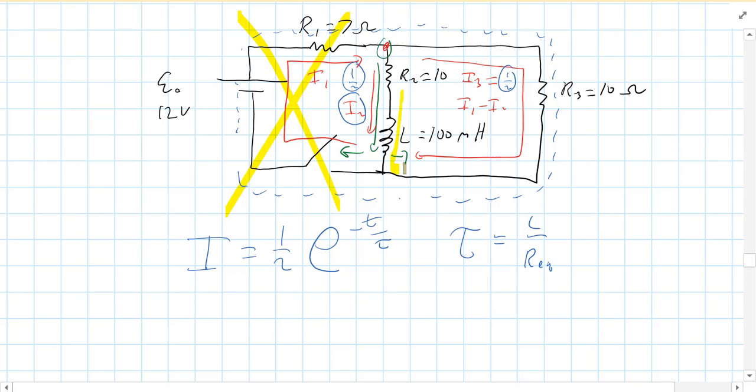Well, in this case, currents, the half amp's going to go through the inductor, through R3, and through R2 to get back to the inductor. So your L is 0.1 henry, or 0.1 henrys, 100 millihenrys. What's Req?